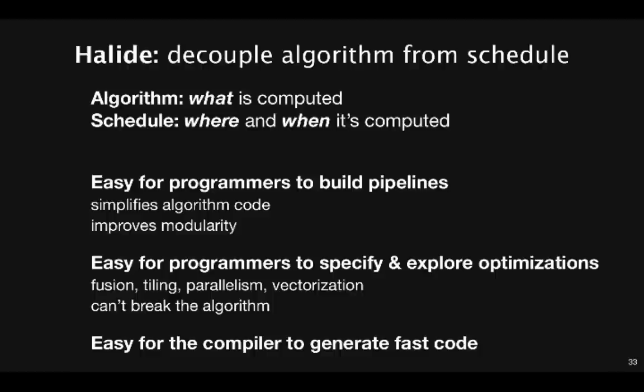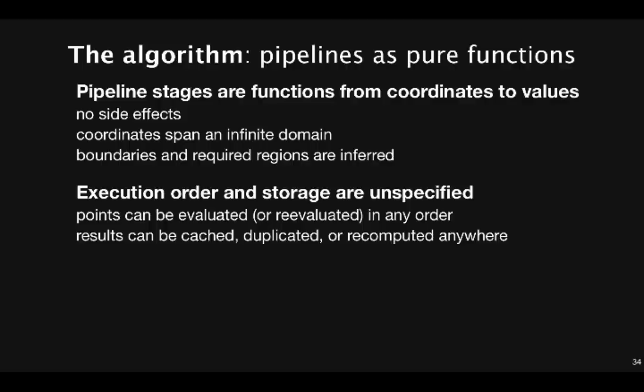Once you've defined an algorithm and a schedule, it's actually pretty easy for a fairly dumb compiler to do the mechanical work of generating fast code. So once we strip out the concerns of optimization, the algorithm is defined as a series of functions from pixel coordinates to the expressions that give the values of those coordinates. These functions have no side effects. They can be evaluated over any point in an infinite domain, and the required region of each stage will be inferred by the compiler. The execution order and storage of points in each function are left unspecified. Points can be evaluated or re-evaluated in any order. The results can be cached, duplicated, thrown away, or re-computed without changing the meaning.